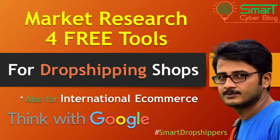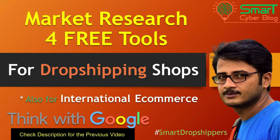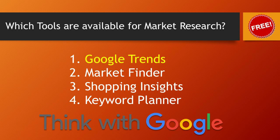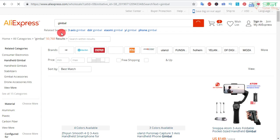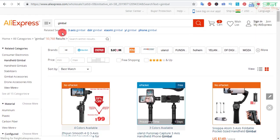Hello smart dropshippers! In my previous video I talked about four different free tools provided by Google: Google Trends, Market Finder, Shopping Insights, and Keyword Planner, which we can use for market research before launching our product. In this video I will give you tutorials of these tools in brief, and for this purpose I have chosen a micro niche called gimbal or camera stabilizer.